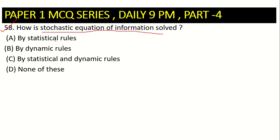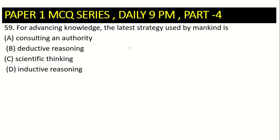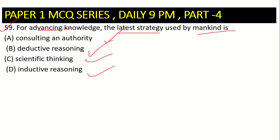Next, question number 58: how is the stochastic equation of information solved? Statistical rules are used — that is scientific thinking. If I say rational thinking, logical thinking — if these words are given to you, you have to answer accordingly.